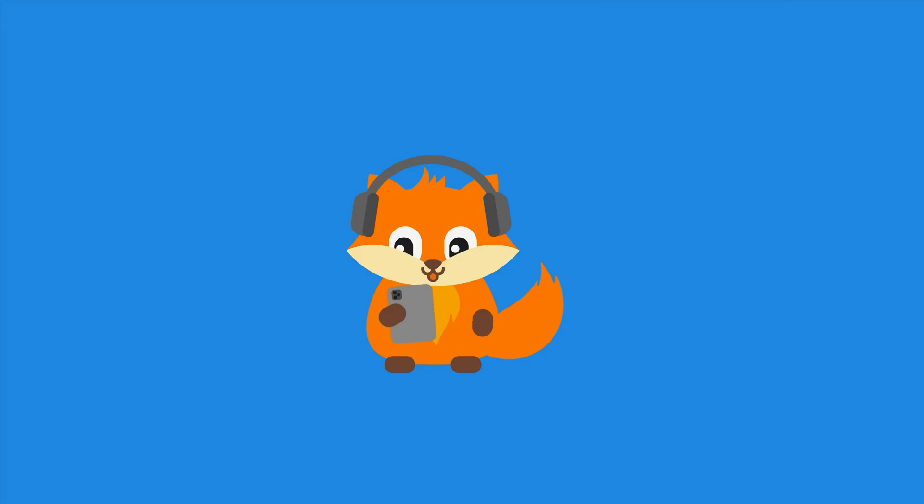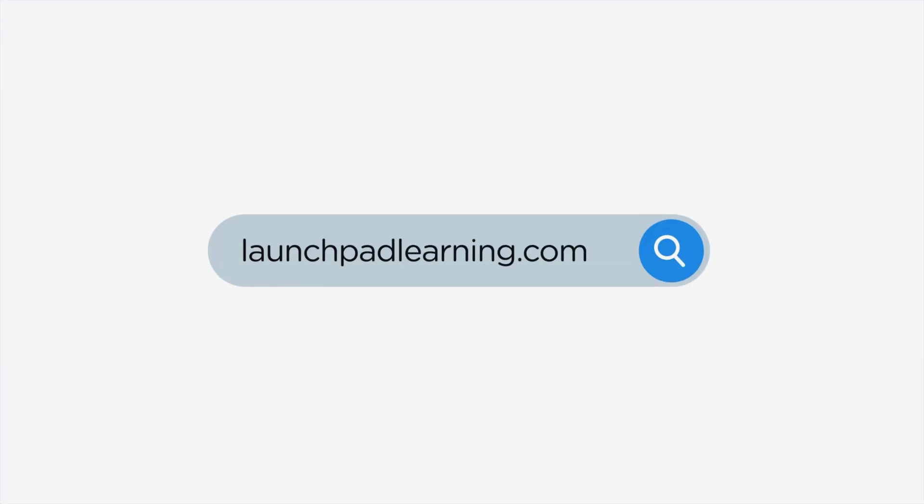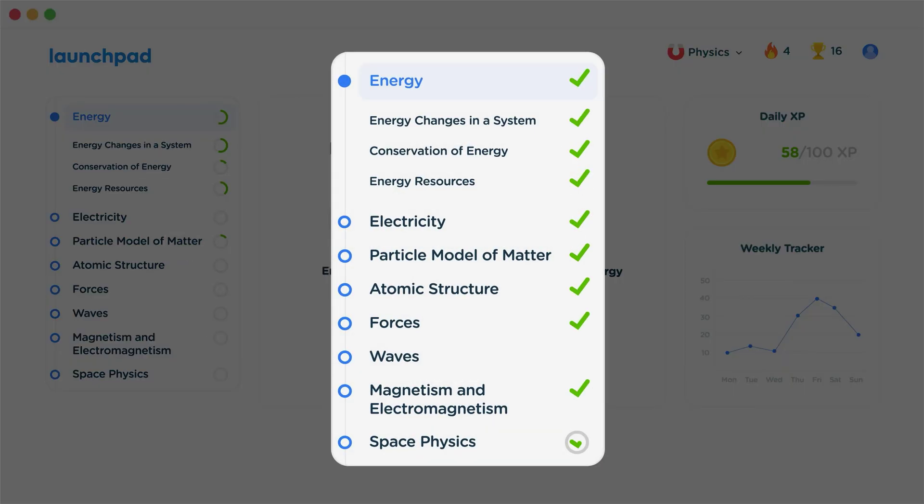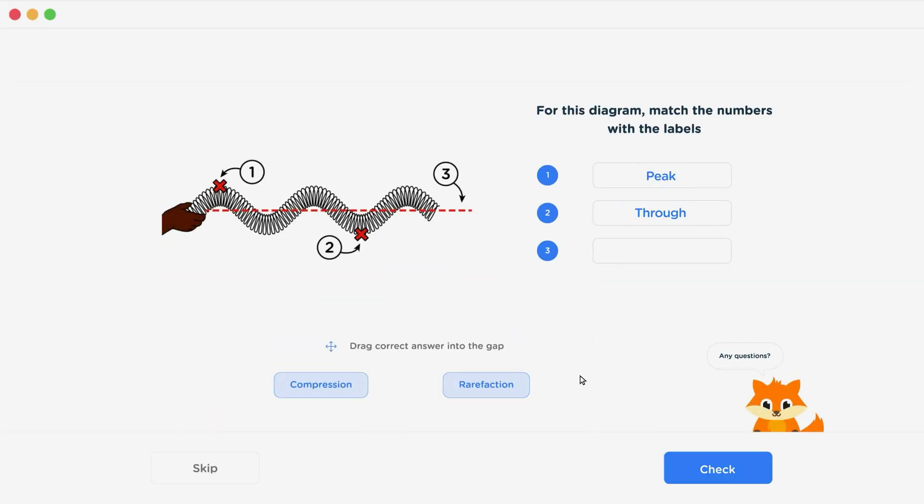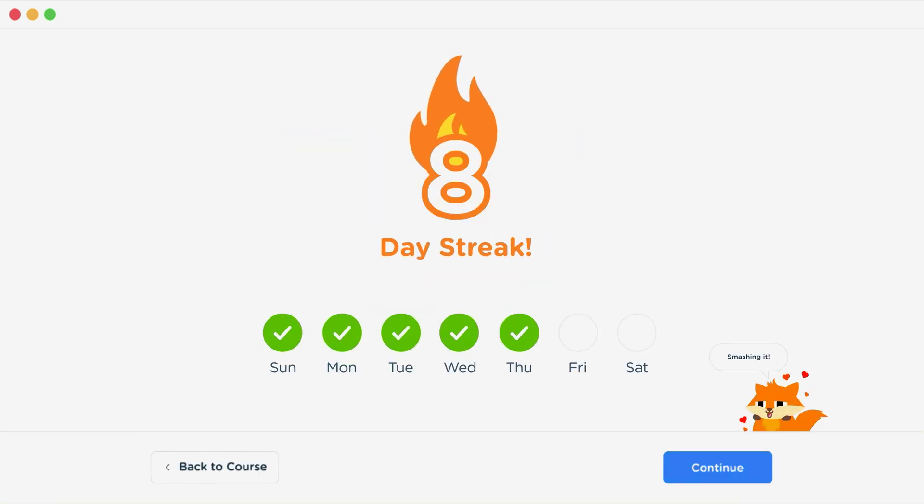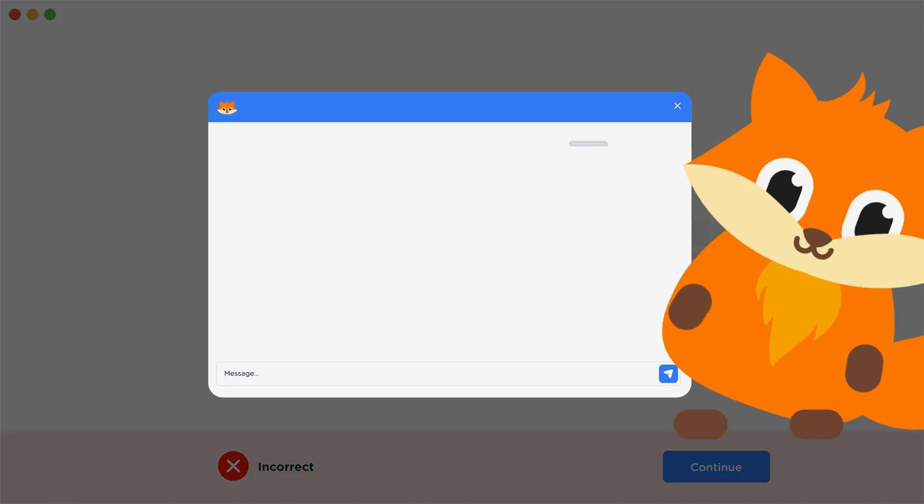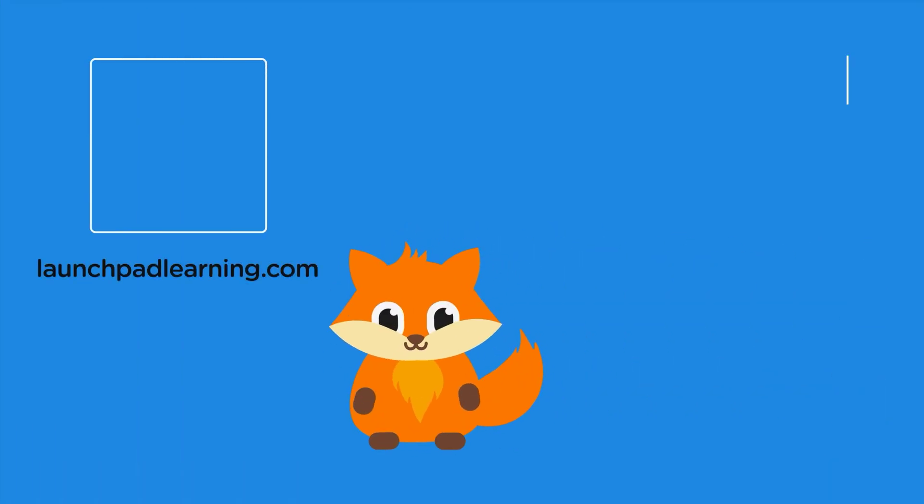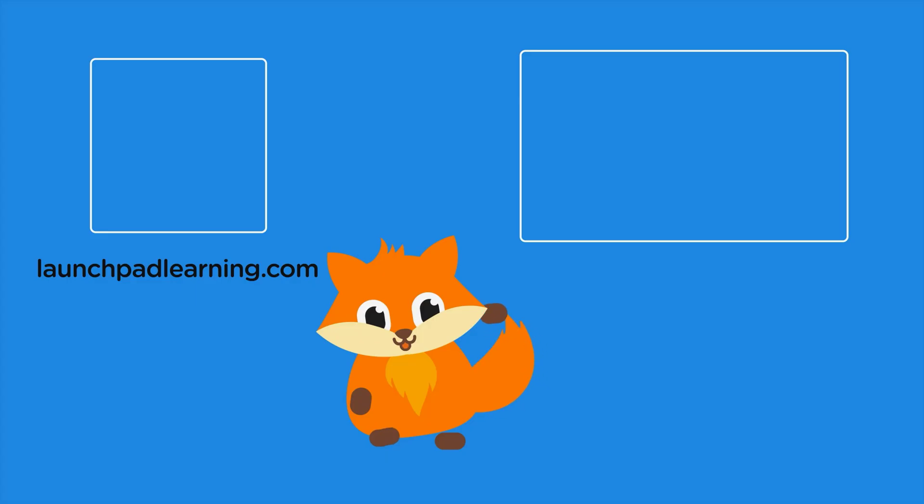Thanks for watching. If you want to take your GCSE revision to the next level, head over to launchpadlearning.com and check out our smart learning platform that's been designed to get you top results in your exams. We cover your whole specification and make revision fun, with interactive quizzes, easy-to-follow videos and more. You'll be kept motivated by your own AI tutor who's here to support you every step of the way. To check it out for yourself click here or click here to keep watching a selection of the videos from our full GCSE physics course. See you there!